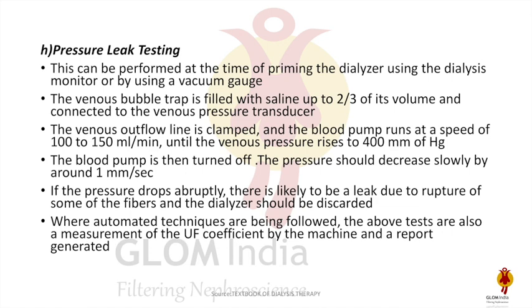For pressure leak testing manually: the venous bubble trap is filled with saline up to two-thirds of its volume and connected to the venous pressure transducer. The venous outlet line is clamped and the blood pump runs at 100 to 150 ml per minute until venous pressure rises to 400 mmHg. The blood pump is then turned off and the pressure should decrease slowly at around 1 mmHg per second. If the pressure drops abruptly, there is likely a leak due to rupture of some fibers and the dialyzer should be discarded.